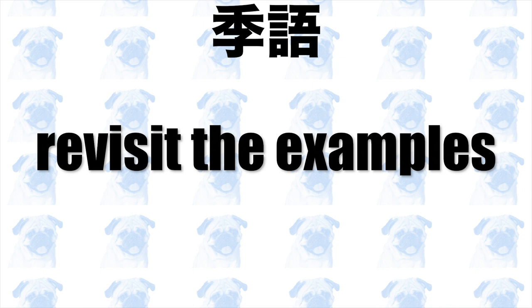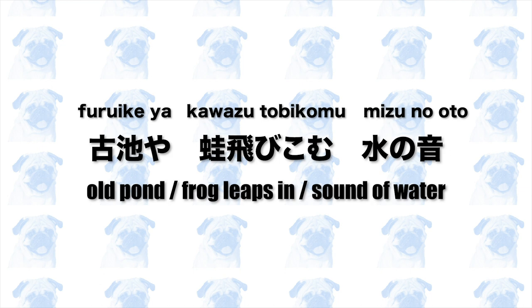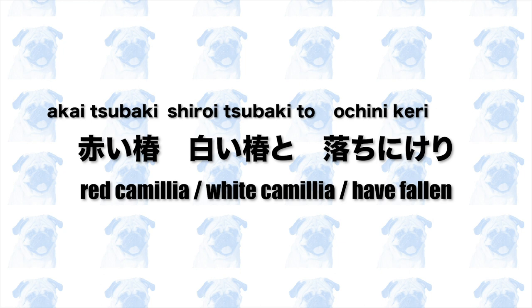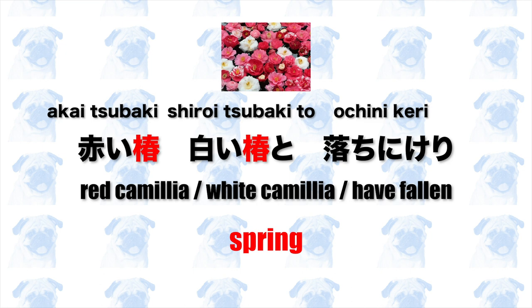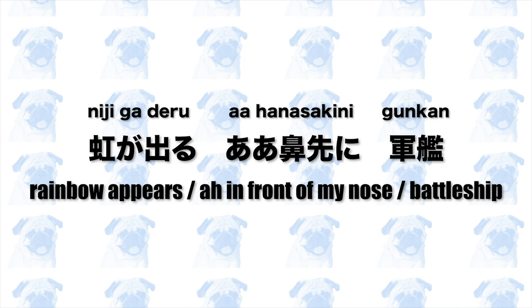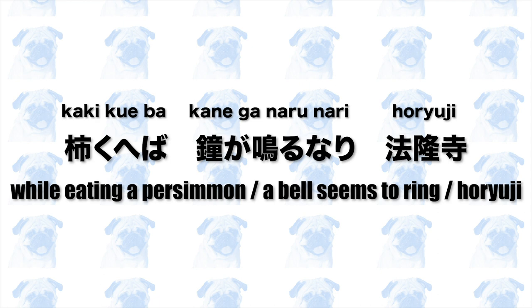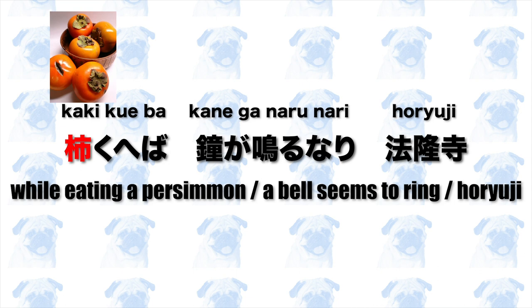Now that we know the basics of kigo, let's revisit the examples and identify each haiku's season. The kigo in Basho's frog haiku is kawazu, which may indicate either spring or summer, though it is commonly assumed this haiku is set in spring. In 赤い椿、白い椿とおちにけり, the kigo is tubaki (camellia) — similarly to sakura, tubaki is a symbol of spring. In 虹が出る、ああ花先に、軍艦, the kigo is niji (rainbow), which, although not exclusive to any season, is associated with summer. One extra haiku has the kigo of persimmon — a popular fruit in Japan eaten in autumn.